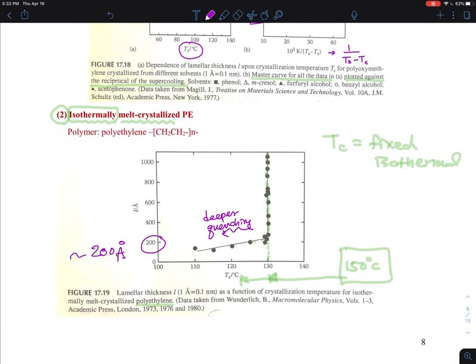To tell you the truth, this is the data done by Professor Bernhard Wunderlich. He was a faculty at RPI before he moved to the University of Tennessee. He had a very big research program in the area about crystalline polymers using thermal analysis. He almost developed a new method of differential scanning calorimetry when he was a faculty here.